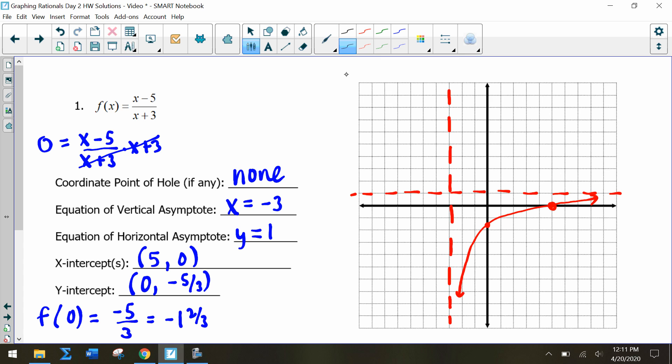In order for it to be a function, we have to either have a piece of the graph up in this section that I'm circling or in this bottom section.